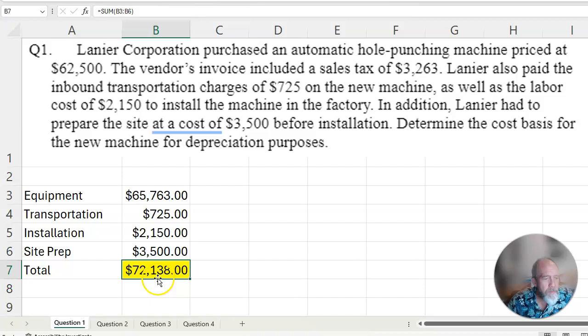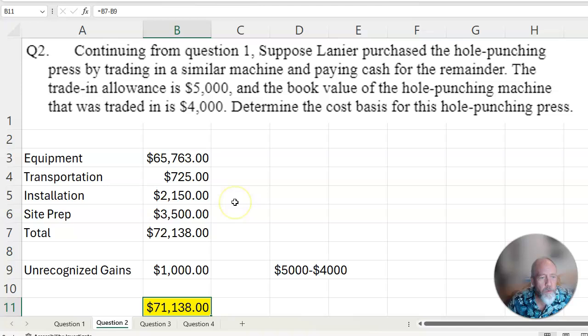So the cost of the machine, which is the sales cost plus the sales tax, gives you that total right there. Add them all together and there's your cost, there's your amount that's available for depreciation. The sum of all those.